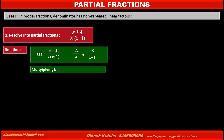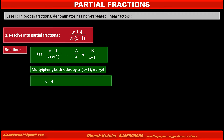Multiplying both sides by x(x + 1), which is the denominator of the given fraction, the left-hand side becomes (x + 4). On the right-hand side, the first term becomes A(x + 1) and the second term becomes Bx. Consider this as equation 1.